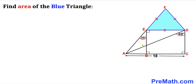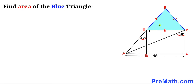Welcome to pre-math. In this video we have a right triangle ABE along with a rectangle BCDE put together, such that angle AEB is 30 degrees, angle ADC is 60 degrees, and side length AC is 18. Furthermore, we have an equilateral blue triangle DEF on top of this rectangle, and our task is to calculate the area of this blue shaded triangle DEF.